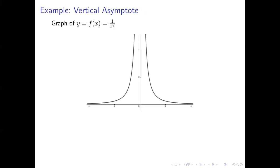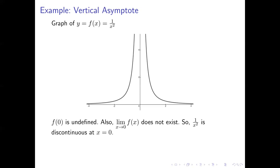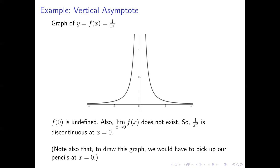Let's take a quick look at an example — the same one we used when we first introduced vertical asymptotes: the graph of 1 over x squared. Notice that f of 0 is undefined. We can also see from the graph that the limit as x approaches 0 of f of x does not exist — we can say it's infinity, but that's just shorthand; we don't have a number to assign to this limit. Therefore, 1 over x squared is discontinuous at x equals 0. Also note that if you were to draw this graph by hand, you would need to pick your pencil up at x equals 0, which is another clue that we have a discontinuity there.